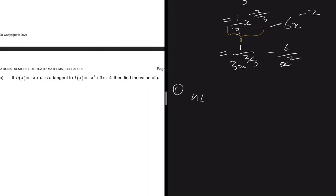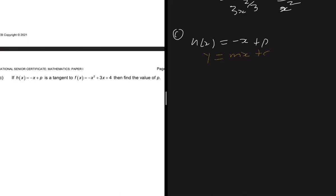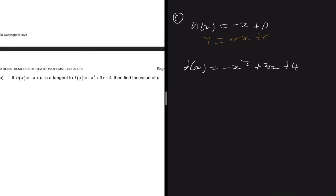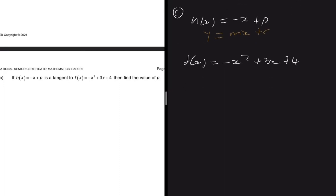This is the last question. Last but not least: if h of x equals to minus x plus p is a tangent — if it's a tangent it's a straight line, so we know that this is y equals to mx plus c — and the equation is a tangent to the function f of x equals to minus x squared plus 3x plus 4, then find the value of p.